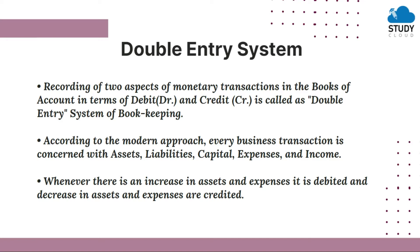We have to record all this in the double entry system in a proper way on the debit and credit side. According to the modern approach, every business transaction is concerned with assets, liabilities, capital, expenses, and income. Assets are property owned by the business, liabilities are amounts payable, capital is the amount invested, and some could be expenses and income.